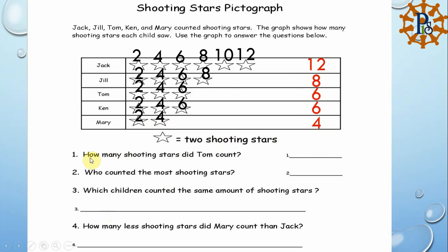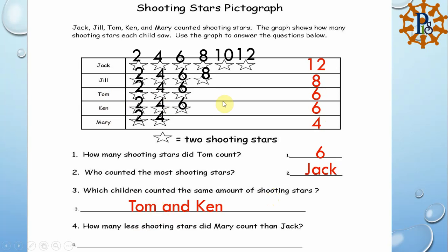Now let's solve the questions. How many shooting stars did Tom count? Tom counted 6. Who counted the most shooting stars? The highest number is 12, and that was Jack. Which children counted the same amount? Tom and Ken both counted 6, so we write Tom and Ken.